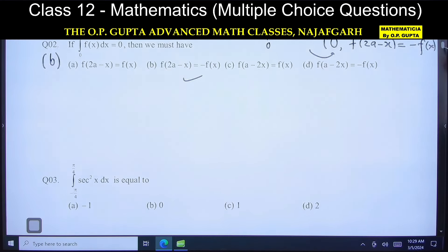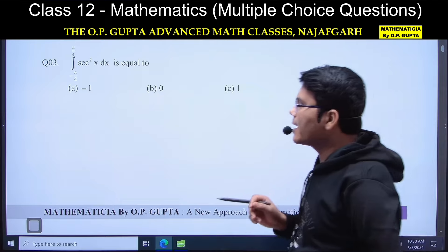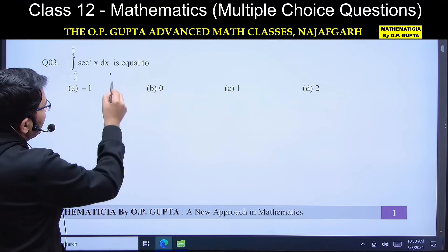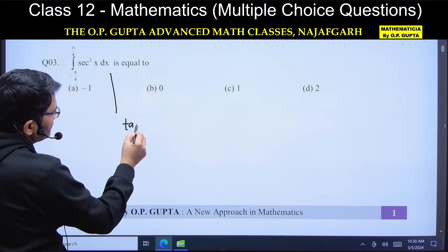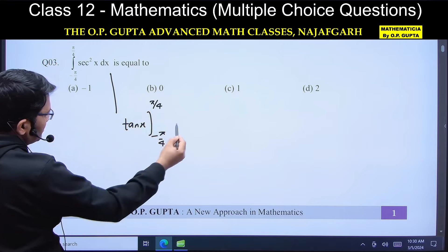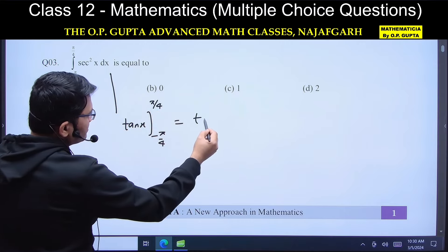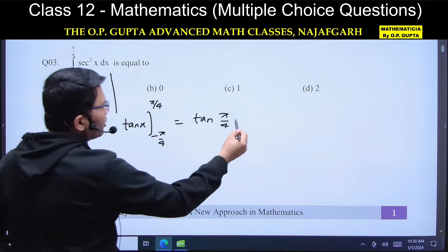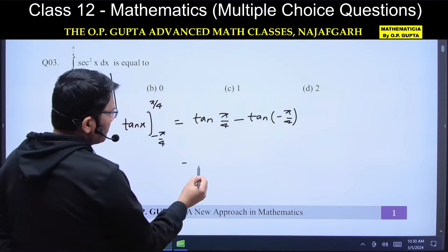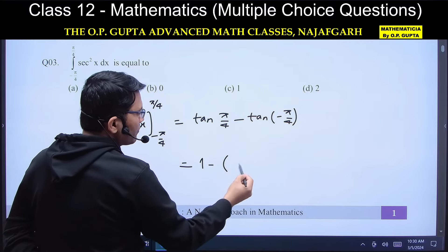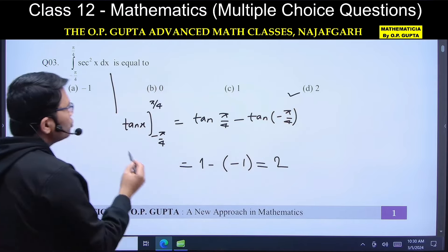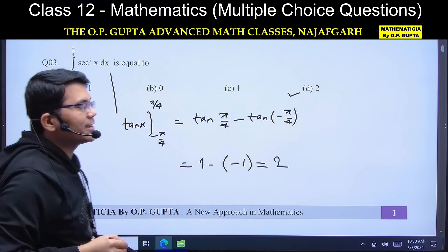Now let's move to question number 3. इस integral की value निकालनी है, limits minus π/4 से π/4 वाली। Secant square x का integral होगा tan x। Upper limit डालोगे: tan(π/4) = 1, lower limit tan(−π/4) = −1। पूरा simplify होकर 2 आएगा, यानि option D सही है, question 3 के लिए।